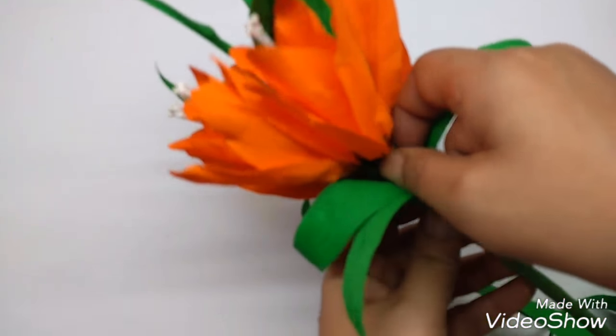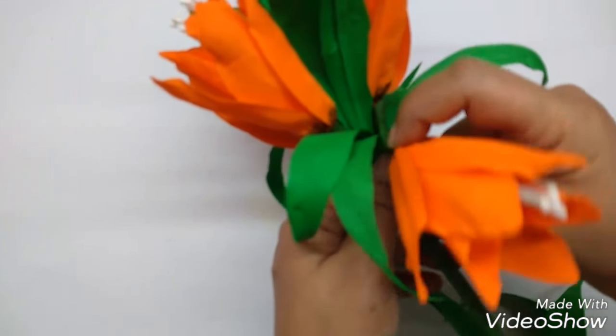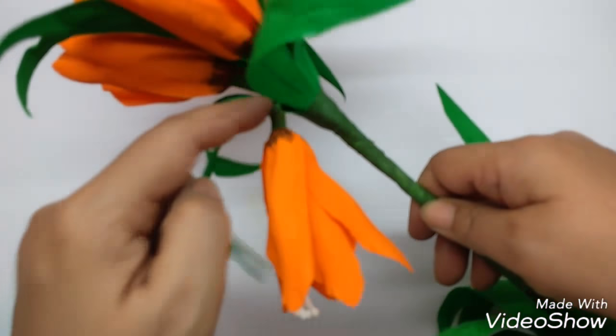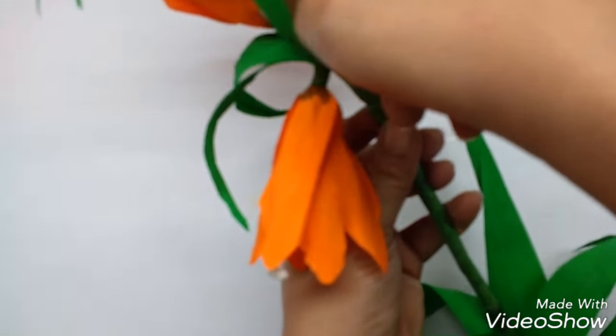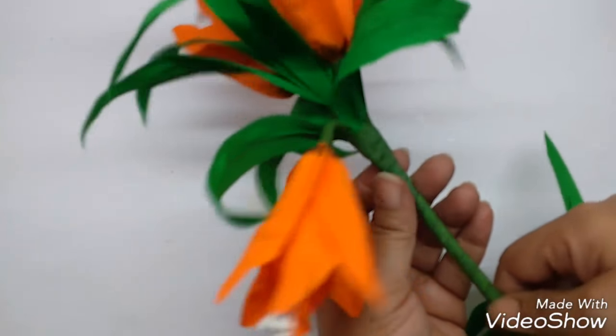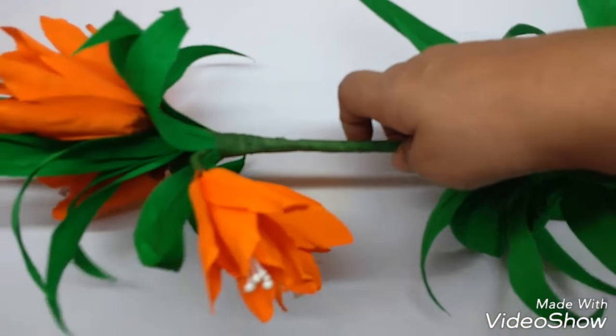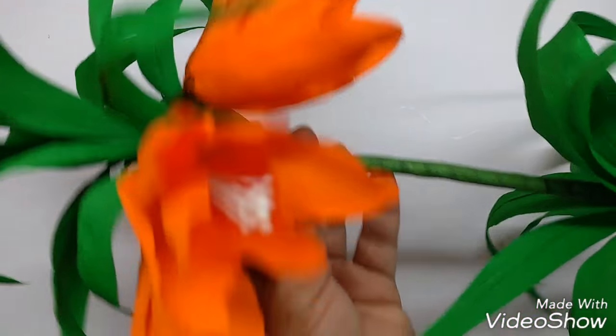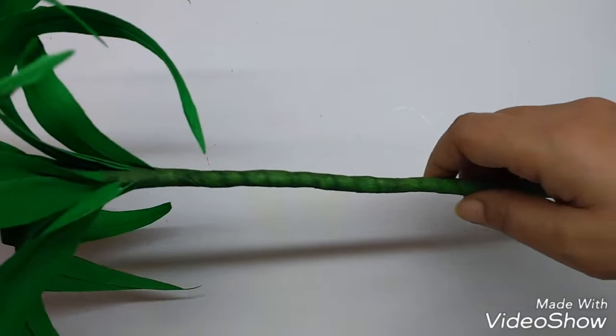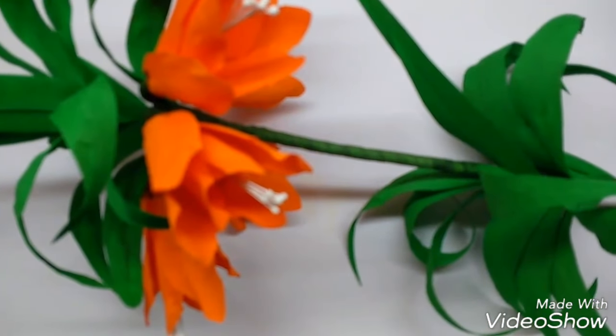Now just pull down the flowers one by one. Just hold the stem of the flower with your thumb and then put it down. So it has a nice curve.